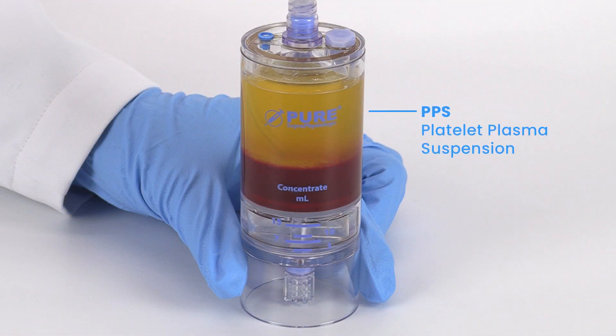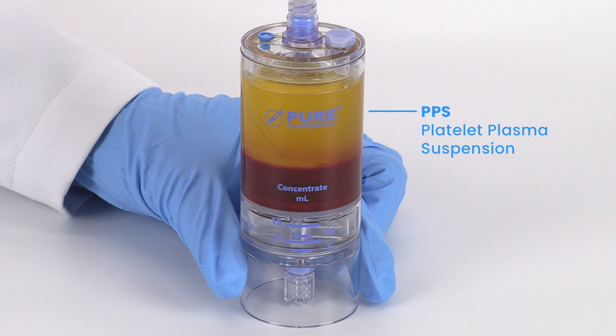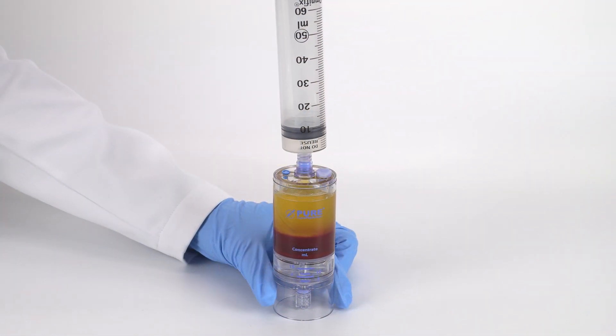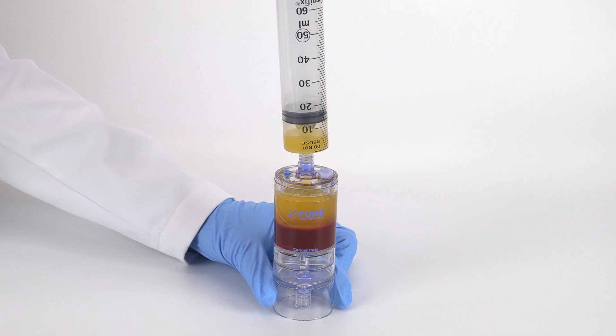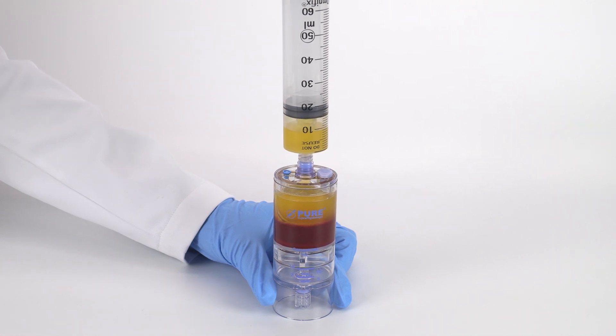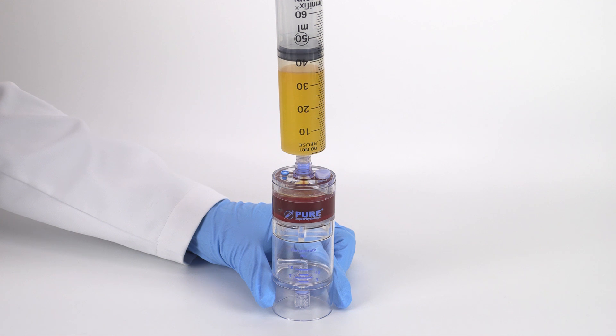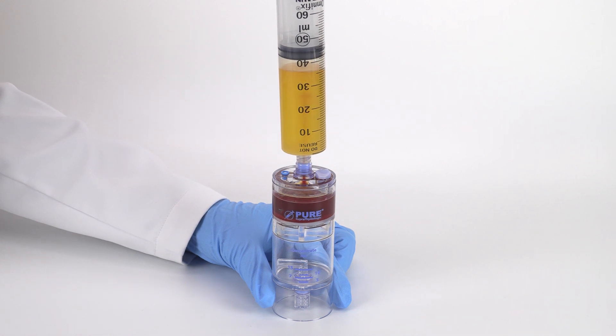After centrifugation, the platelet plasma suspension, or PPS, will be separated above the red blood cell layer. Attach a sterile syringe to the top port and aspirate the platelet plasma suspension. Platelet recovery is improved by collecting a small flash of red blood cells equivalent to approximately 0.5 milliliters.